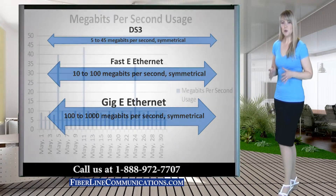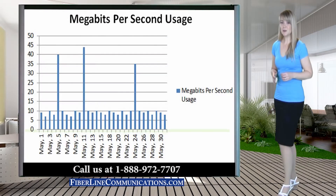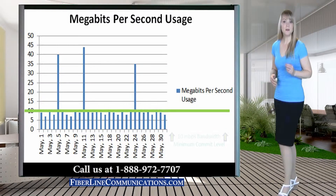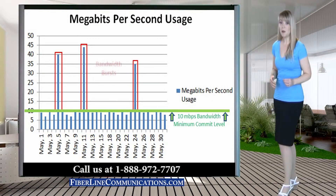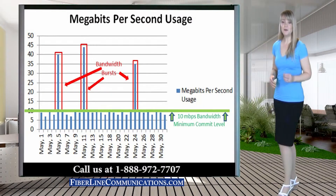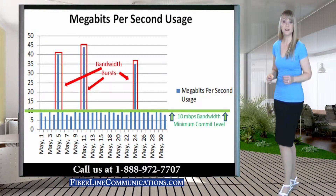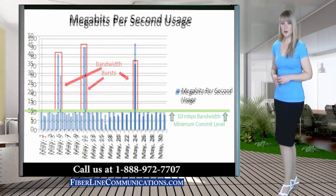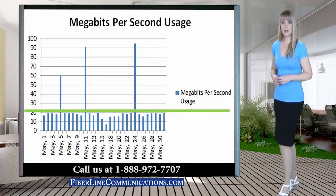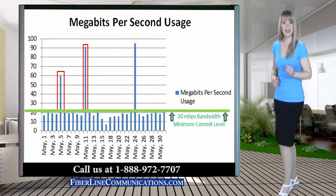For example, if you purchase a burstable DS3 circuit, you can commit to pay for 10 Mbps minimum each month, but have the ability to burst up to a full 45 Mbps during sporadic times of unique need for increased bandwidth.